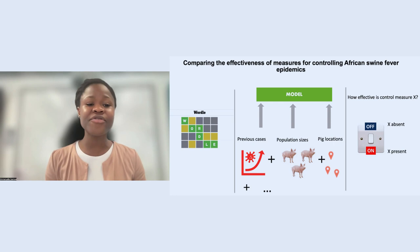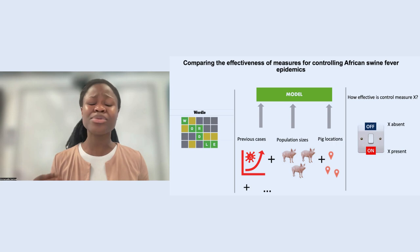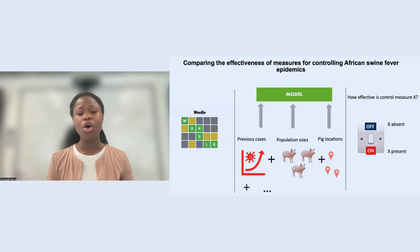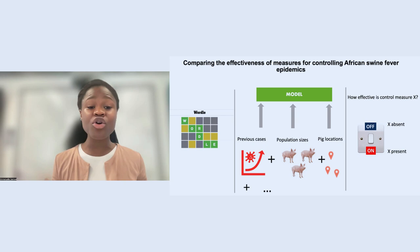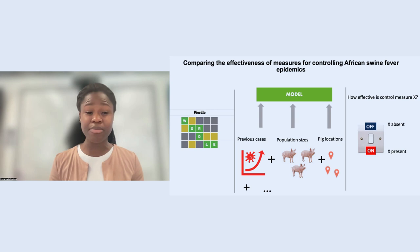ASF is caused by the ASF virus, which spreads quickly, causing weakness and death rates up to 100%. Sadly, ASF has no cure or vaccine yet. What is even more concerning are the ongoing ASF epidemics in several parts of Europe and Asia, which have resulted in the loss of at least 7 million pigs since 2018.